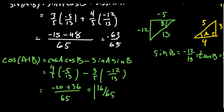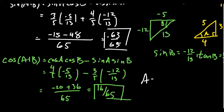Notice that sine — which represents the y-coordinate — is negative 63 over 65, and cosine — the x-coordinate — is positive 16 over 65. This tells us that angle A plus B lives inside the fourth quadrant, where y is negative and x is positive.